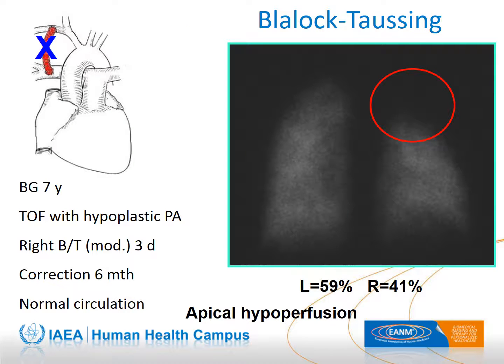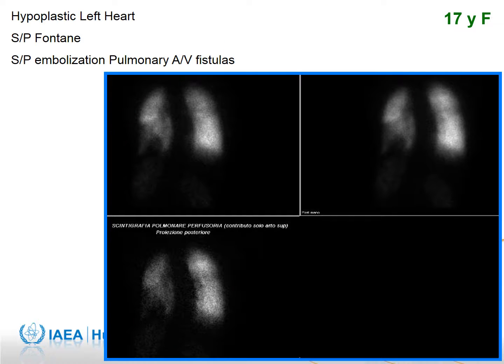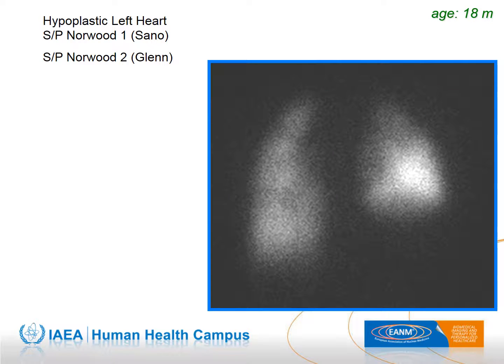This is a typical apical hypoperfusion as a consequence of a right Blalock-Taussig shunt, which has been resolved due to definitive repair with an excellent global result. Another case shows focal hypoperfusion in the lower left lung related to an interventional procedure: embolization of pulmonary arteriovenous fistulas. In another case, the right lung is compressed by a hemidiaphragm paralysis.